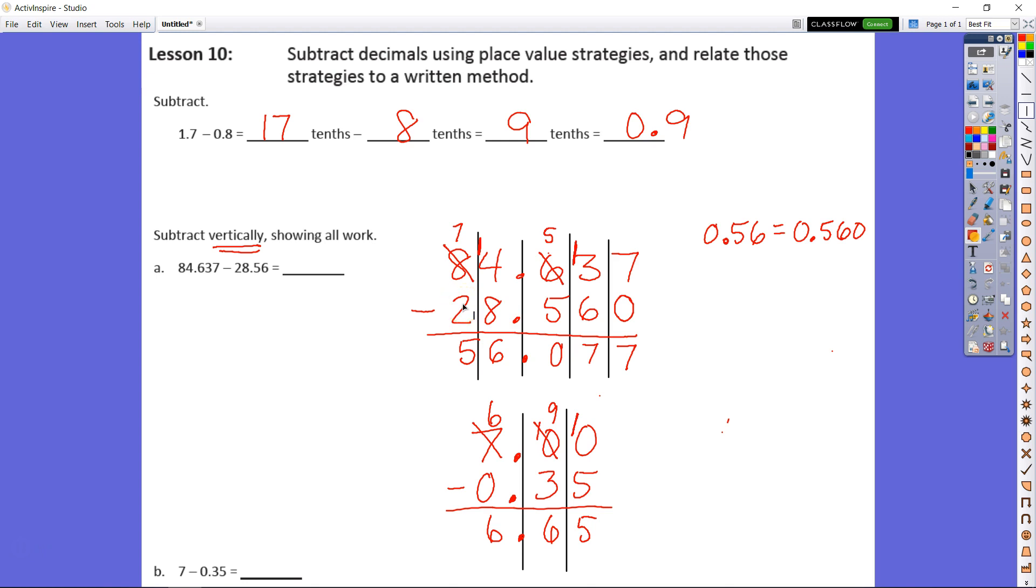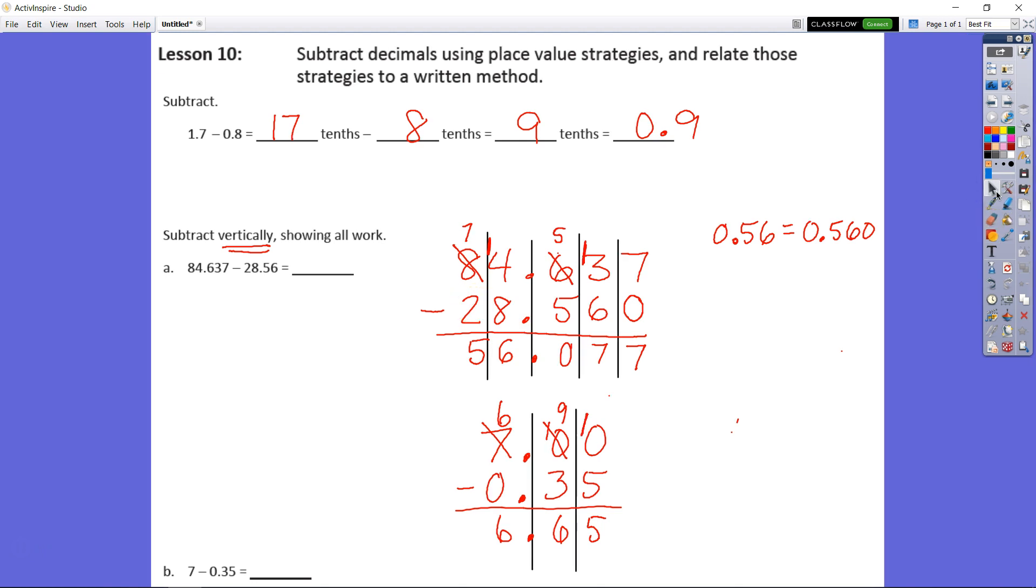If you don't line those numbers up a lot of students in this bottom number here B made the mistake of lining this number up here incorrectly. If you don't recognize that this is a 7, not seven tenths, not seven hundredths, it's a 7, a whole 7, it has to be in the ones place. And you know that you have no ones in the second number. We have 7 in our minuend and 35 hundredths in our subtrahend.